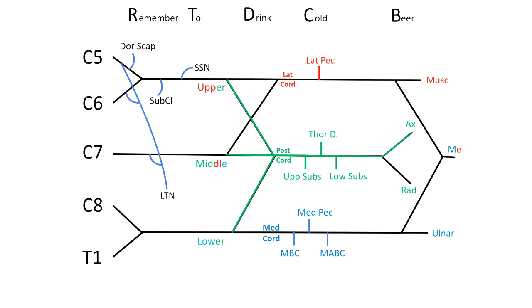Then for the posterior cord, I use the mnemonic ULTRA, which is upper subscapular, lower subscapular, thoracodorsal, radial, and axillary. So those are the branches of the posterior cord.